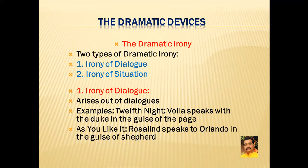In Twelfth Night, when we see Viola speaking with the Duke in the guise of a page, we have an example of irony of dialogue. The audience knew that the character of the page is actually Viola, but the Duke is unaware of this. The same example we find in As You Like It, when we see Rosalind speaking to Orlando in the guise of a shepherd. These are the finest examples from Shakespeare's plays which present irony of dialogue or verbal irony.